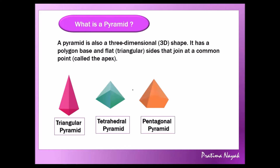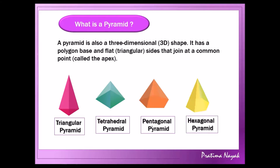Next is the pentagonal pyramid — the base is pentagonal and the sides join at a point, so it is a pentagonal pyramid. Similarly, the hexagonal pyramid has a hexagonal base, and all the sides are triangles meeting at a point.